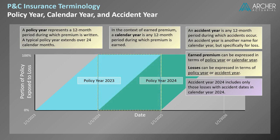Here's a quick example. Consider a claim with a date of loss of July 1st, 2024. Losses related to this claim would be reflected in accident year 2024. However, the claim could be related to policy year 2023 or policy year 2024, depending on the date of the underlying policy.